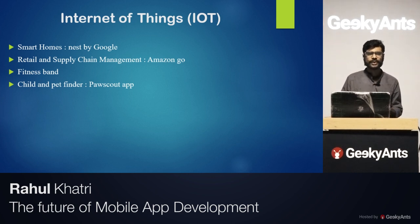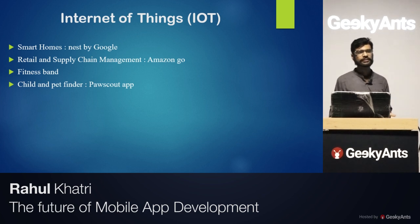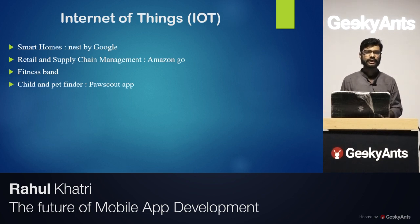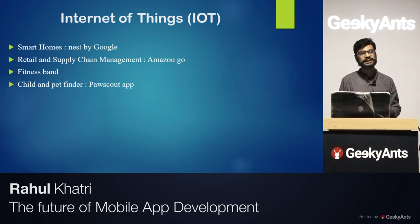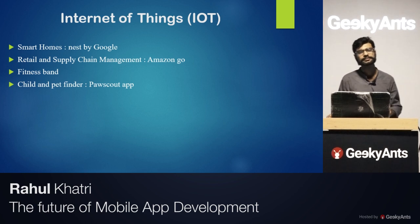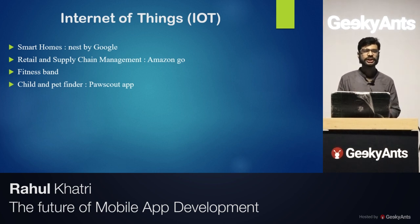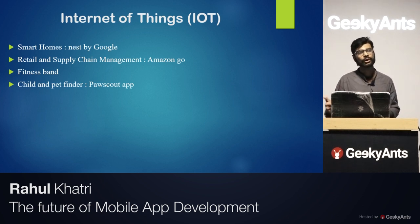IoT also helps in finding a lost child or pet. If your pet goes missing after accidentally leaving a door open, an app like the PAUSAT app uses sensors attached to the pet or child. With GPS or location tracking, you can find the nearest location of your pet through the app and go retrieve them.